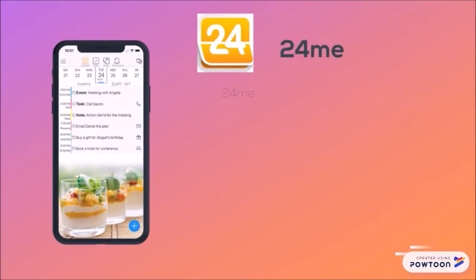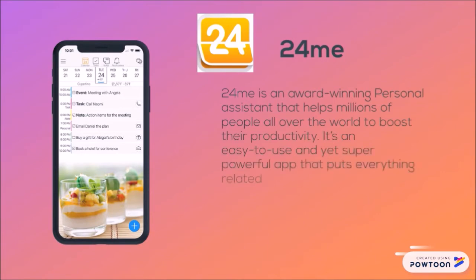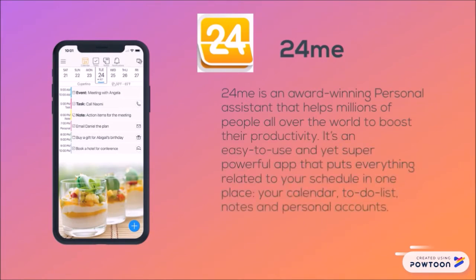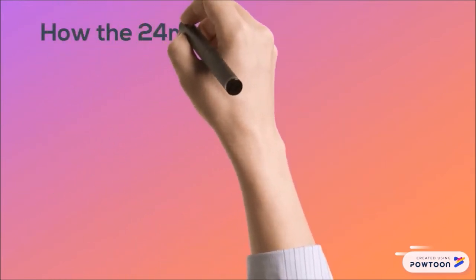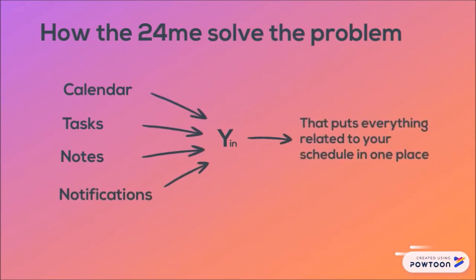24me is an award-winning personal assistant that has helped millions of people all over the world to boost their productivity. It is an easy-to-use yet super powerful app that puts everything related to your schedule in one place: your calendar, to-do list, notes and personal accounts. 24me solves the problem by taking inputs which are calendar, tasks, notes and notifications. Through the activation function, 24me generates the output which puts everything related to your schedule in one place.